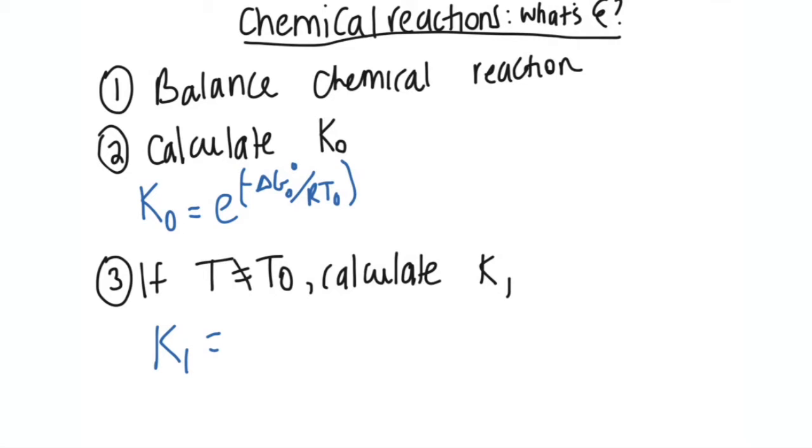Step number two is to always get your K naught. Sometimes you might have a word problem where you're working backwards, so you have the extent and you're working backwards to get the k or something. But anyhow, if that's not the case and you are solving for the extent, your second step would be to find K naught. Like what I said before, I've showed you how to find the change in Gibbs, and then the R and the T naught. Pretty straightforward.